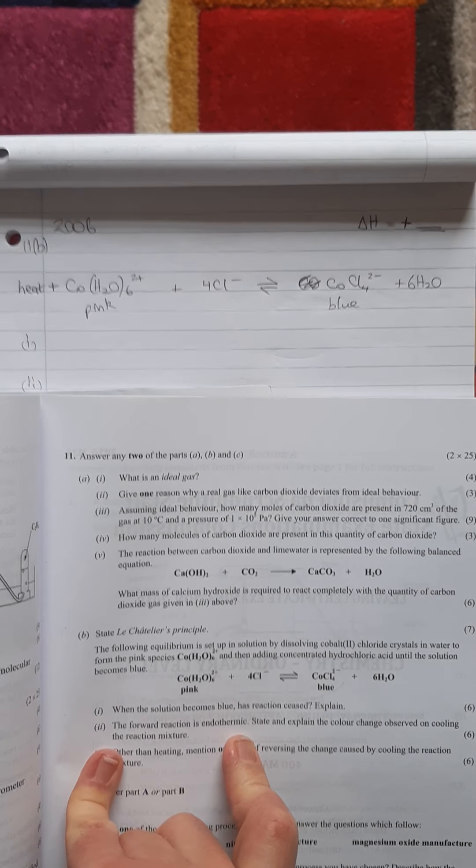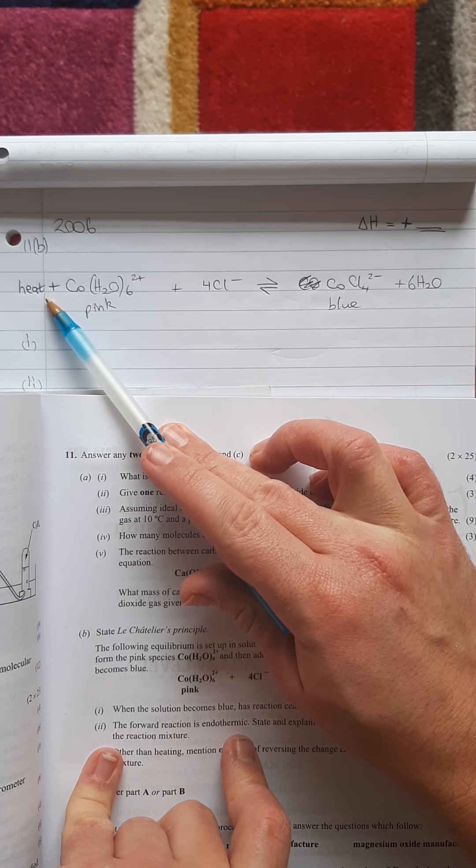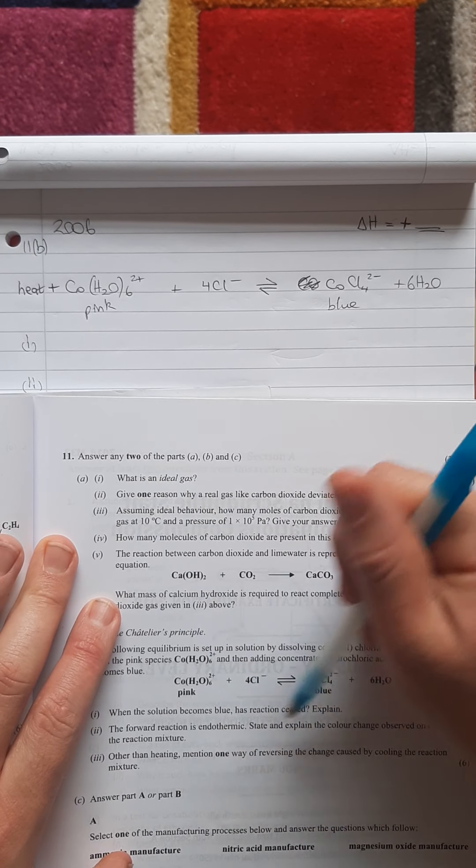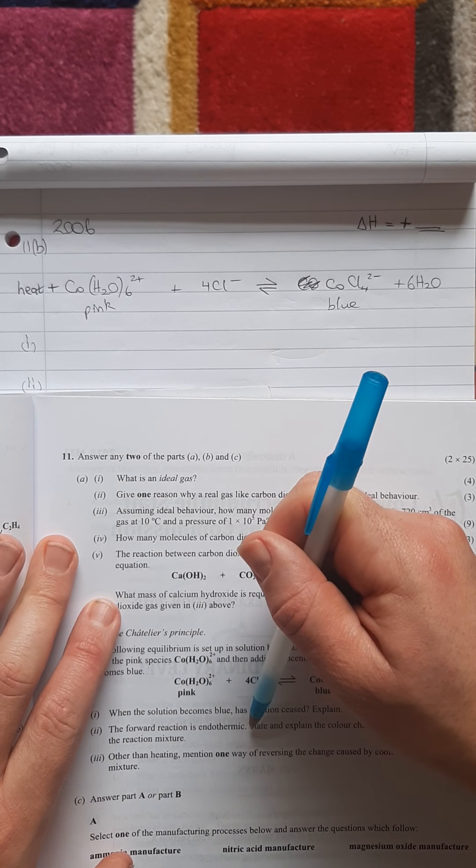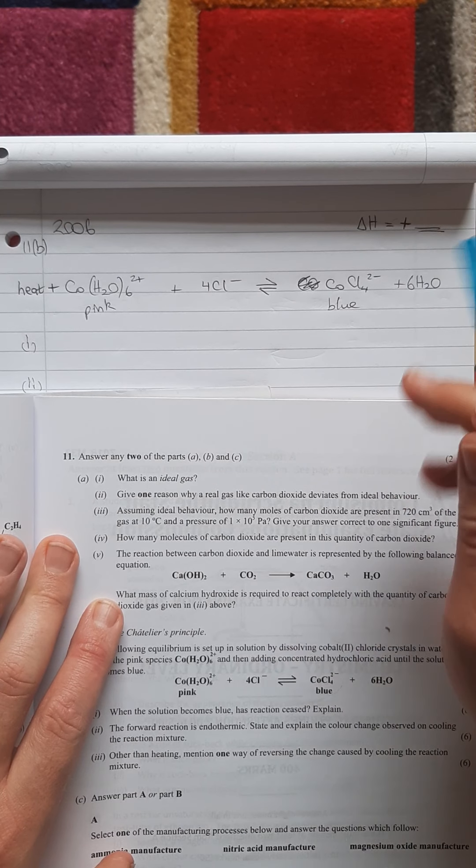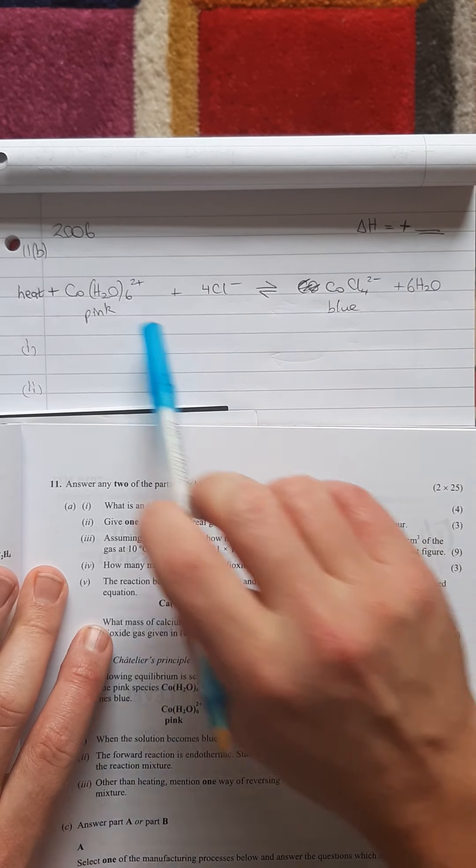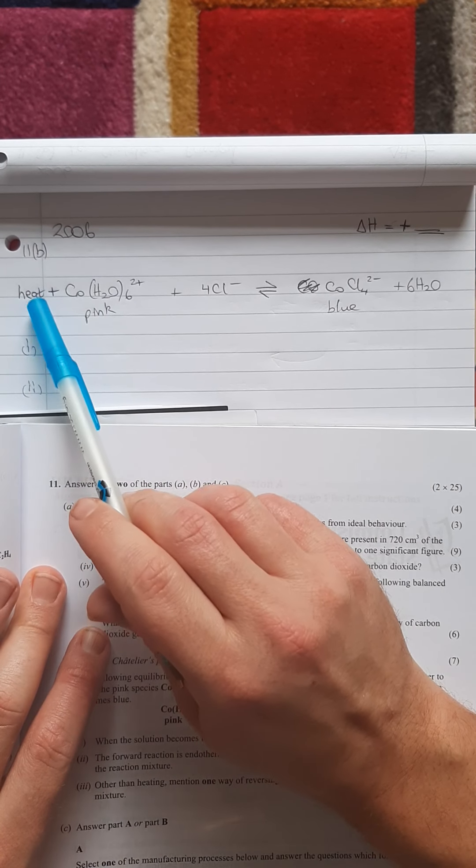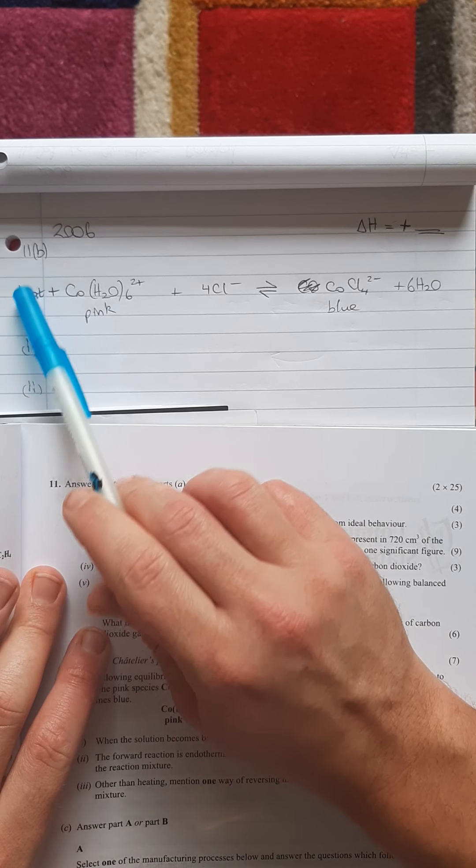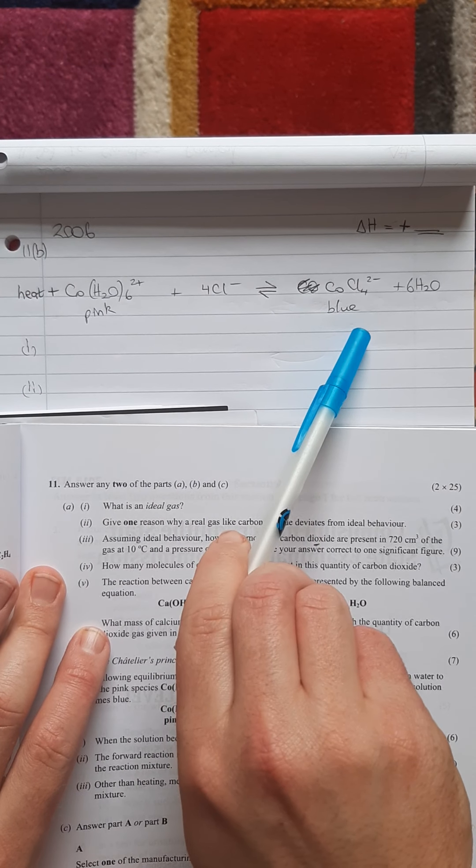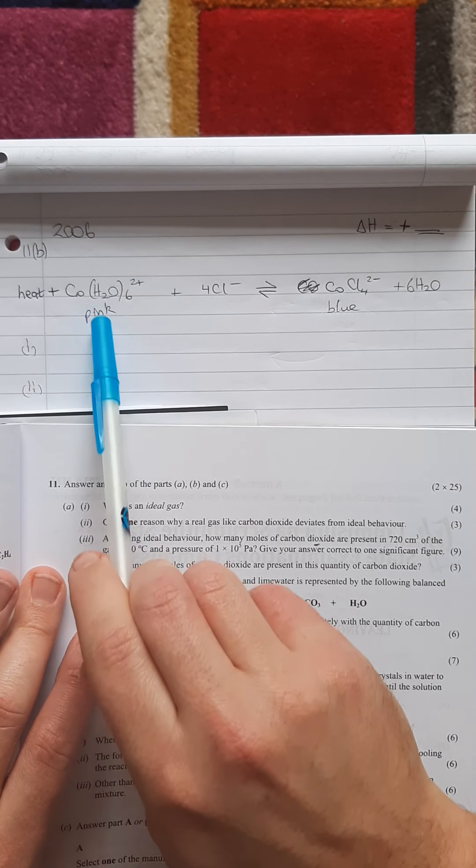The opposite to endothermic is exothermic, which means it gives out heat. The reverse reaction would be exothermic, so heat is a product of the backwards reaction. Part two: the forwards reaction is endothermic, state and explain the color change observed on cooling. If you heat up this reaction, it'll move away from the stress. Heat is one of the products here on the left, so if you put in heat it's going to move away and go blue.